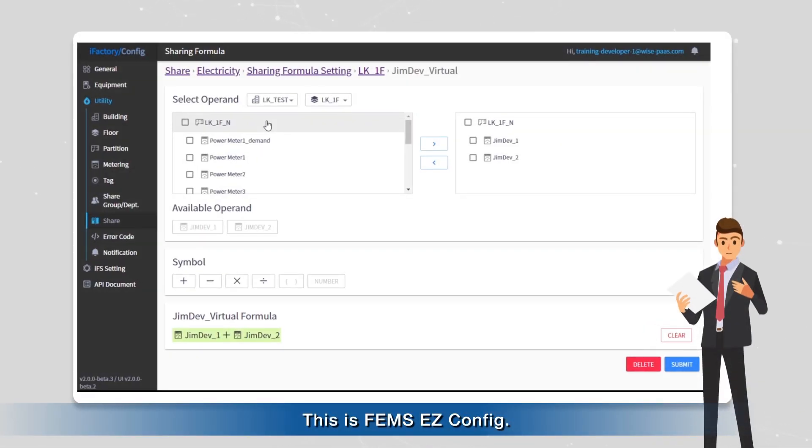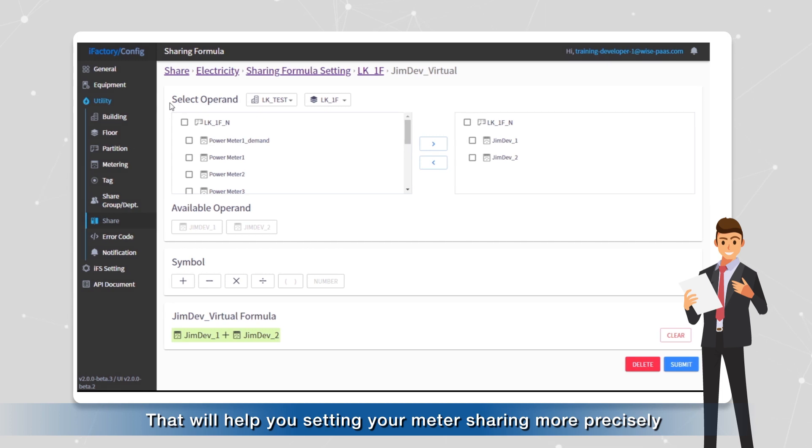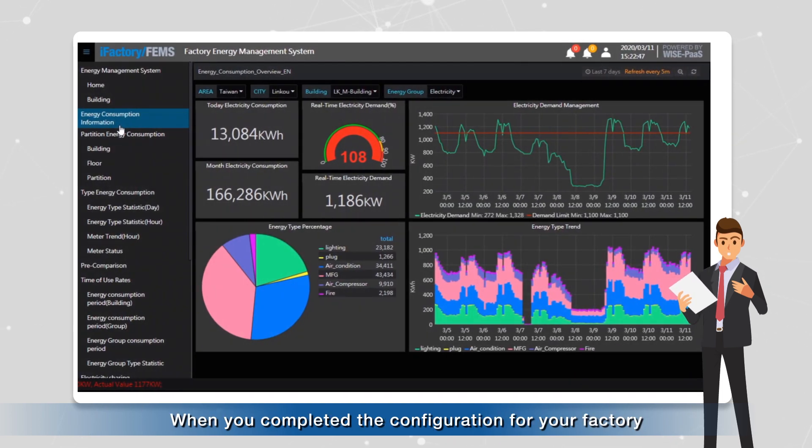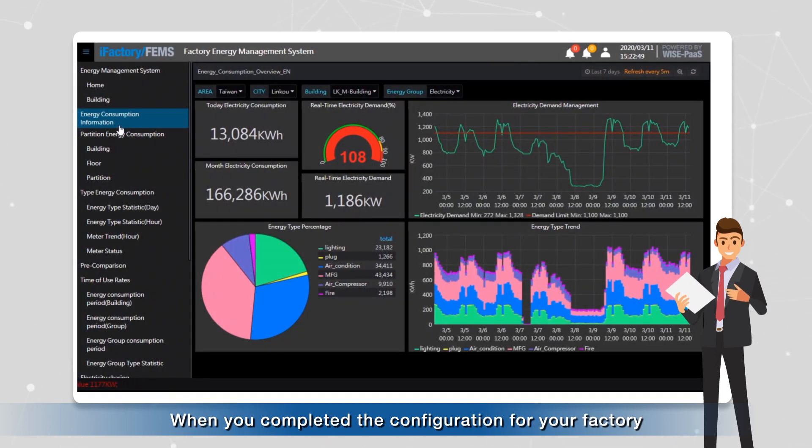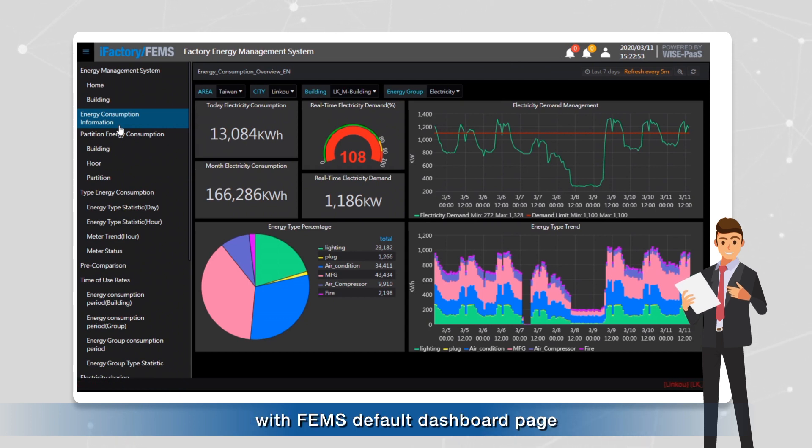This is FEMS EasyConfig. In EasyConfig, you can do the configuration for your factory without any coding. We also provide a very useful tool called the Meter Sharing Formula that helps you set your meter sharing more precisely. When you complete the configuration for your factory, you can start energy management with the FEMS default dashboard page.